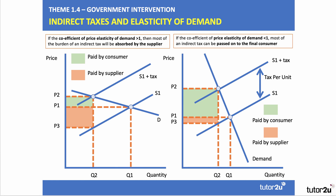On the left-hand diagram we see elastic demand where most of the tax is paid by the supplier, shown in orange. On the right-hand side, a more inelastic demand where most of the tax is paid by the consumer because prices have risen from P1 to P2.